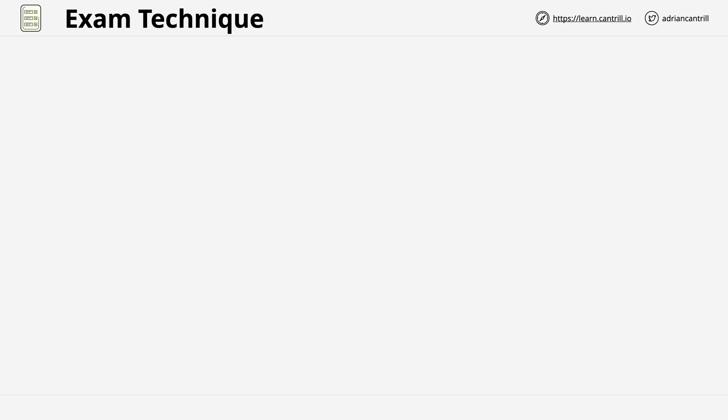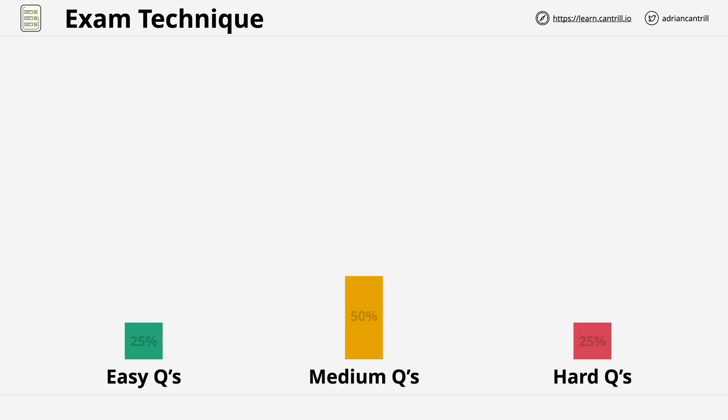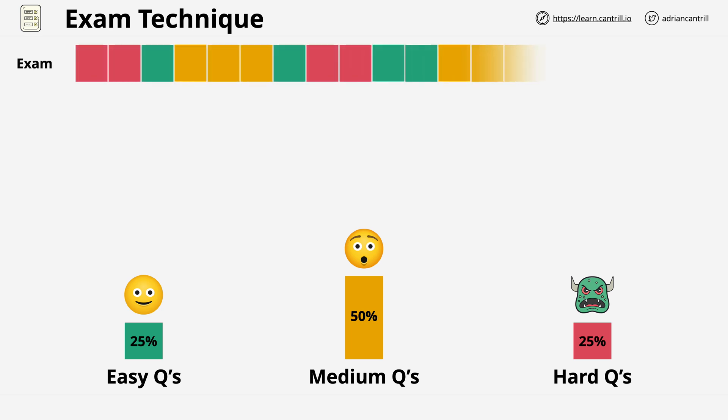In terms of the exam itself, it's going to have questions of varying levels of difficulty, and this is also based on your own strengths and weaknesses. Conceptually, understand that on average the AWS exams will generally feel like they have 25% easy questions, 50% medium questions, and 25% really difficult questions. Assuming that you've prepared well and have no major skill gaps, this is the norm for most people. The problem is the order of difficulty is going to feel random, so you could have all of your easy ones at the start or at the end, or scattered between all of the other questions.